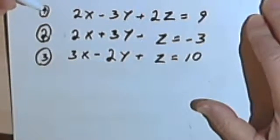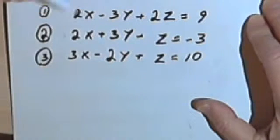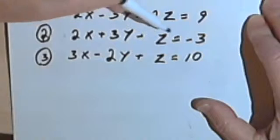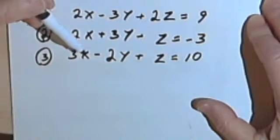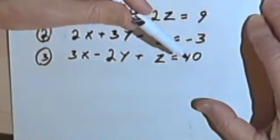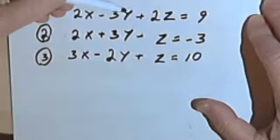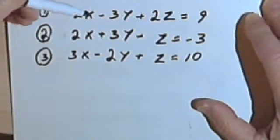Here we've got three equations that I've numbered 1, 2, and 3. The first equation is 2x minus 3y plus 2z equals 9. The second equation is 2x plus 3y minus z equals negative 3. And the third equation is 3x minus 2y plus z equals 10. To start out, what I want to do is eliminate one of the variables so that I end up with two equations with two unknowns.